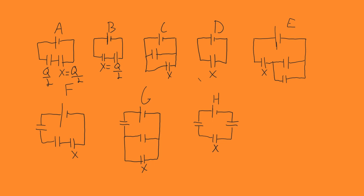Now for C, when we look at capacitors in parallel, the thing that stays constant is the voltage drop. Since each drops the voltage of the battery, each capacitor is going to have the same charge, and they're not split up like in A and B. Instead, it's the total charge of what A and B would have if we combined those two capacitors. So this one is going to have a charge of Q — twice as much.